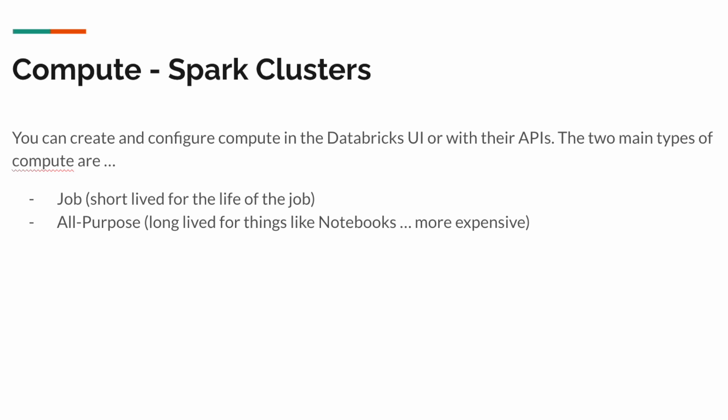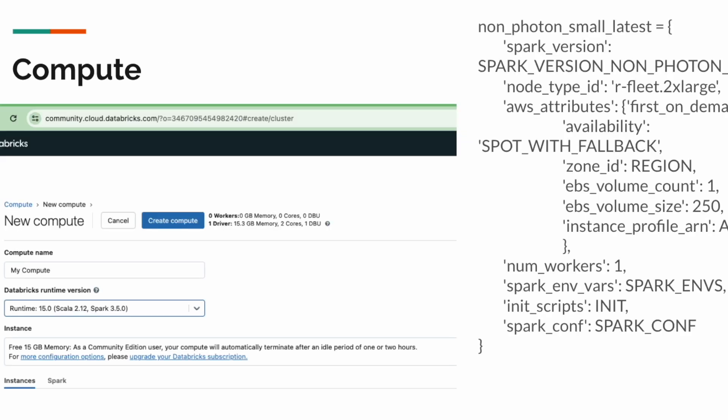There are two ways to create clusters in Databricks. You can click through the UI and make an all-purpose cluster — that's what you see on the left — and that's typically what a lot of people use for notebooks. You set up a cluster and assign different resource sizes to it.